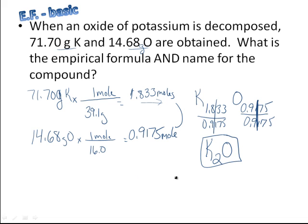And then you just have to come up with a name. The naming, nothing fancy, no Roman numerals. Potassium is in group 1, so it always makes a plus 1 charge. So potassium, and then here's oxygen. No polyatomics, so it's oxide right off the periodic table, so we have an -ide ending. So potassium oxide.